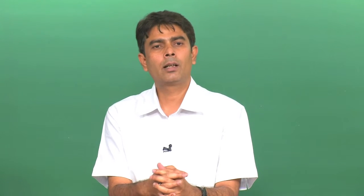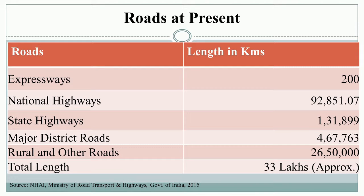Urban roads constructed reached 44,11,840 in the year 2011, which was hardly 1,86,799 at the time of economic reforms in 1991. In terms of expressways, around 200 kilometers were developed. National highways stand at 92,851 kilometers, state highways at 1,31,899 kilometers, major district roads at 4,67,766 kilometers, and total road length is approximately 33 lakh kilometers in the current scenario.